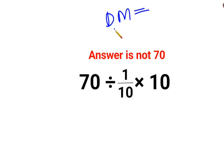So in sums like these you have to go from left to right. Whatever operation happens first from your left hand side has to be done first. So 70 divided by 1 upon 10 is the first operation which you should do.